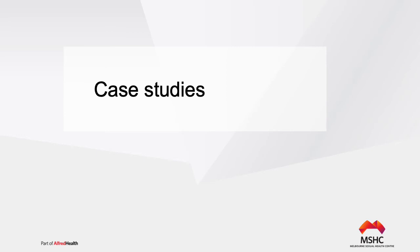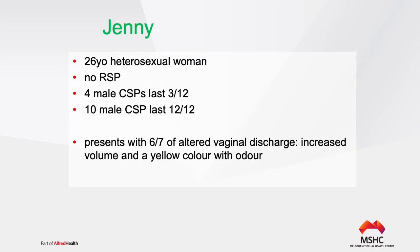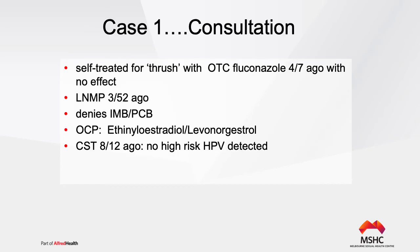Case study: Jenny is a 26-year-old heterosexual woman with no regular sexual partner — four male partners in the last three months and ten in the last 12 months. She presents with a six-day history of altered vaginal discharge: increased volume, yellow colour, with a fishy smell. She does not have associated dysuria, lower abdominal pain, or dyspareunia, no itch or rash. She self-treated for thrush with over-the-counter Fluconazole and Canesten but noticed no improvement.